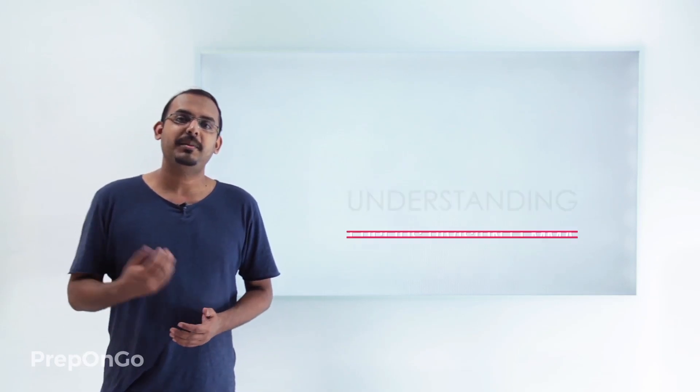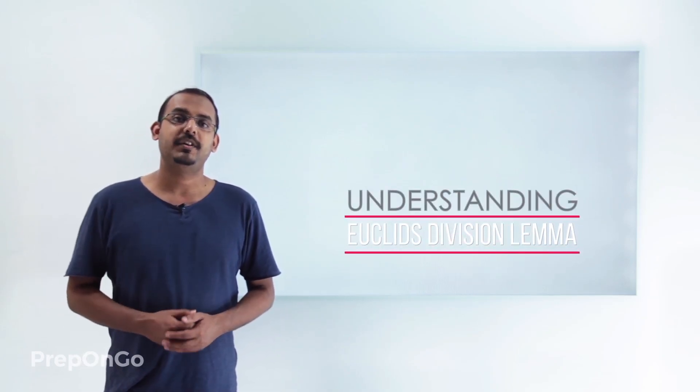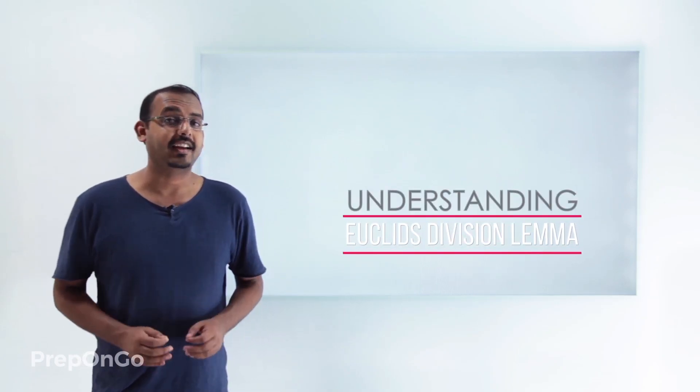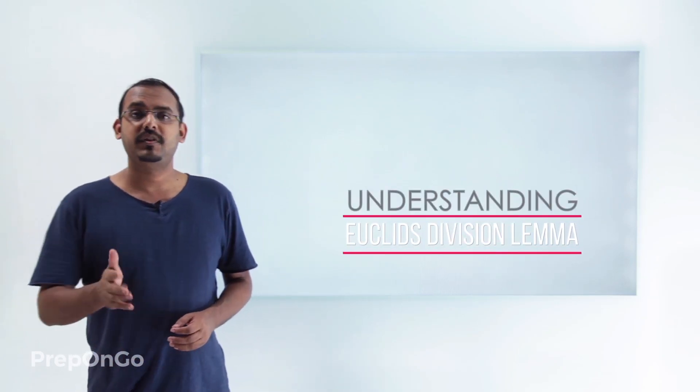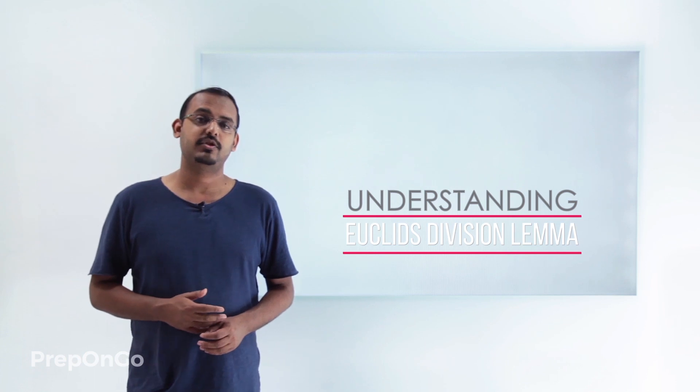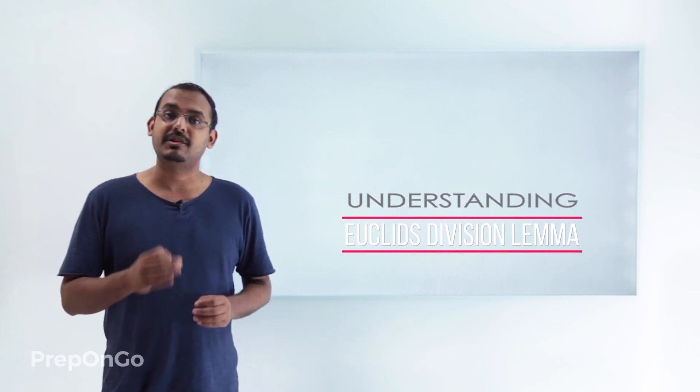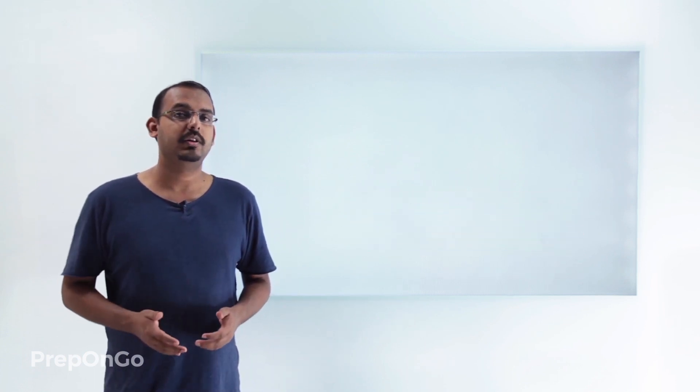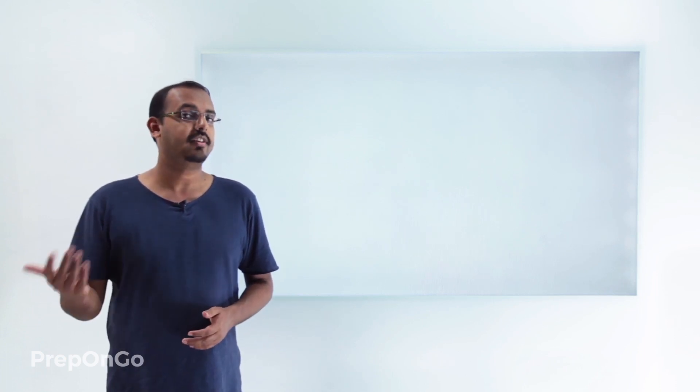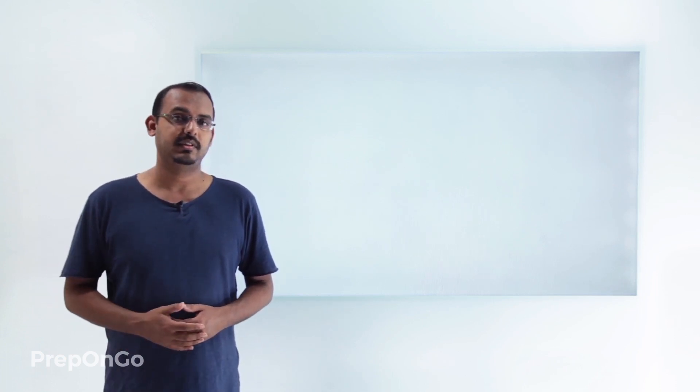Hello everyone. In the previous video we have seen the different categories in which we put numbers. We have seen what are natural numbers, what are whole numbers, what are integers. We have also looked at what rational numbers are and what irrational numbers are.